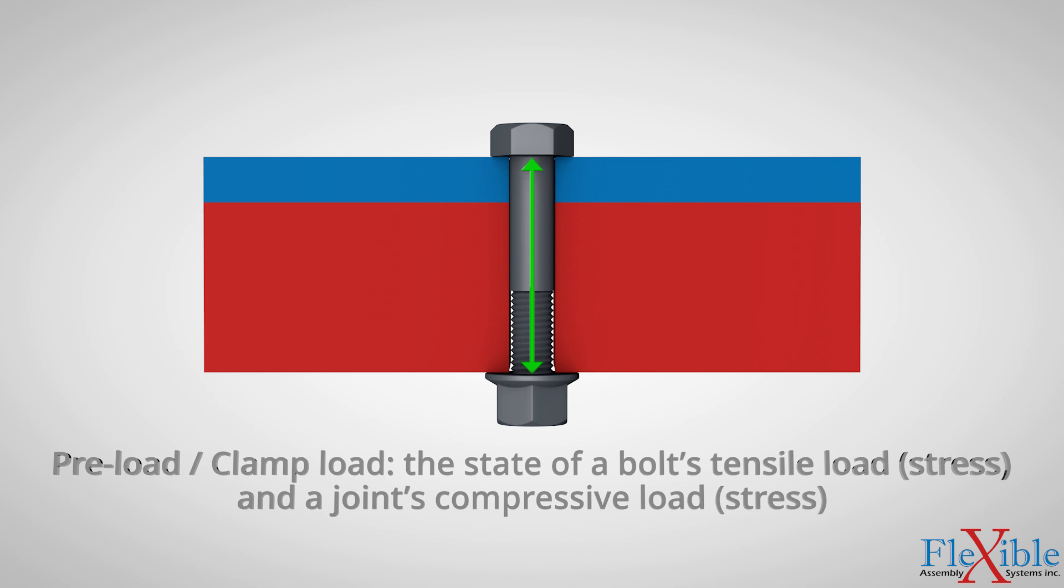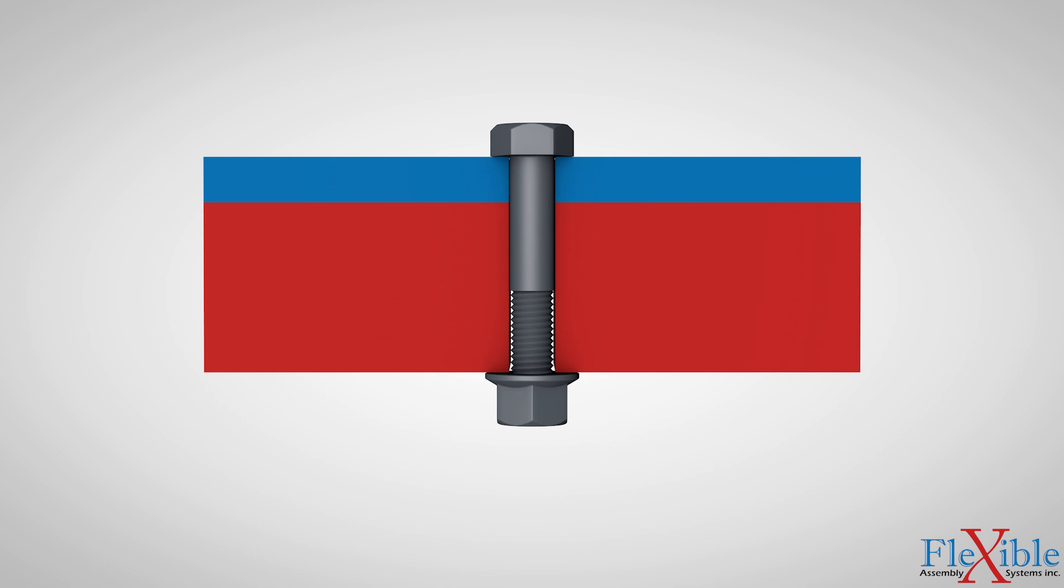Both of these types of loads, although opposite, rely on the structure of the bolt and joint to be strong enough to resist deformation from compression or stretching. Let's take a deeper look into the fastener's strength.